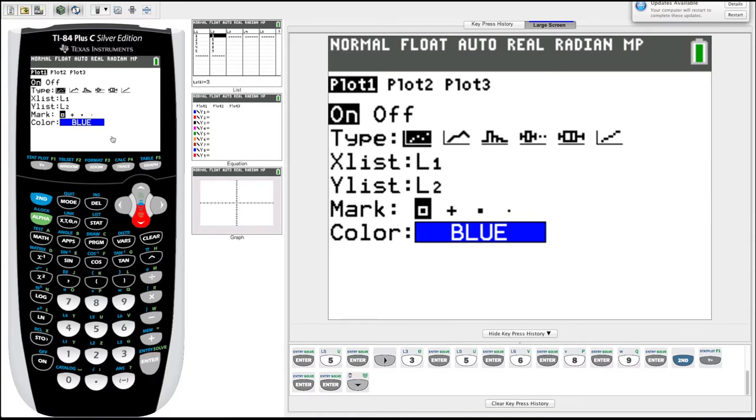Under type, there's a few different types of plots we can make. You've got your box and whiskers and histograms, but the first one that we'll select because we want to scatter plot is the first one that's highlighted right now. Hit enter. Now it's asking us what list we want for our x values. It should default to list one for x and list two for y, which is exactly what we want. So then we can just go down.